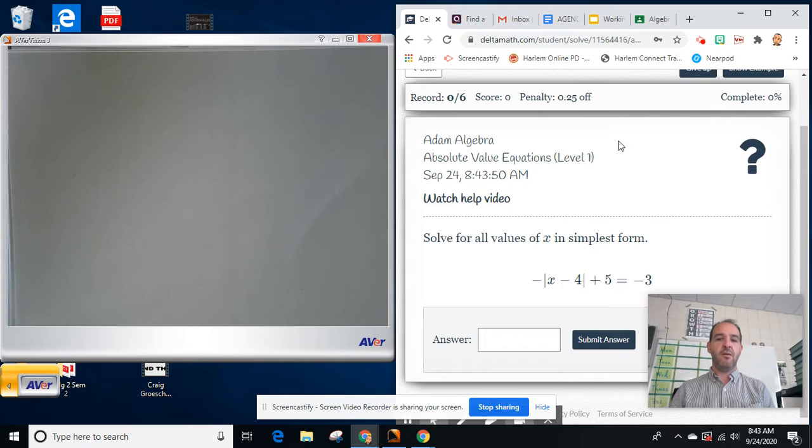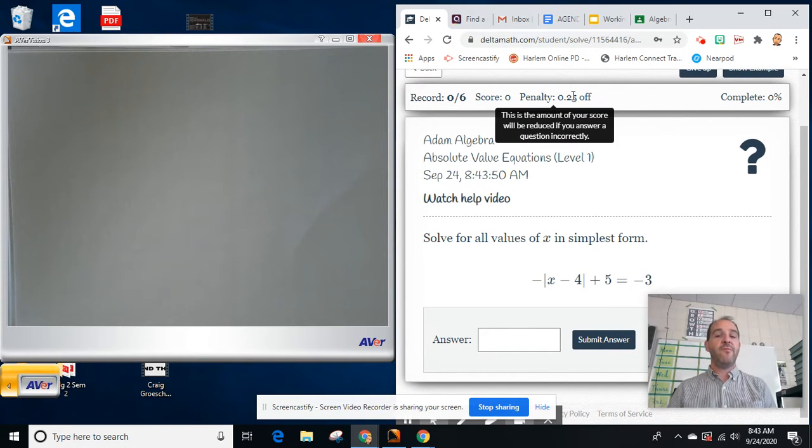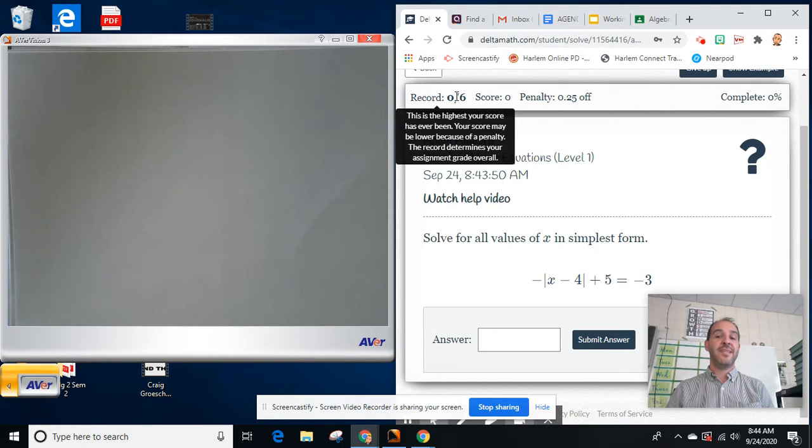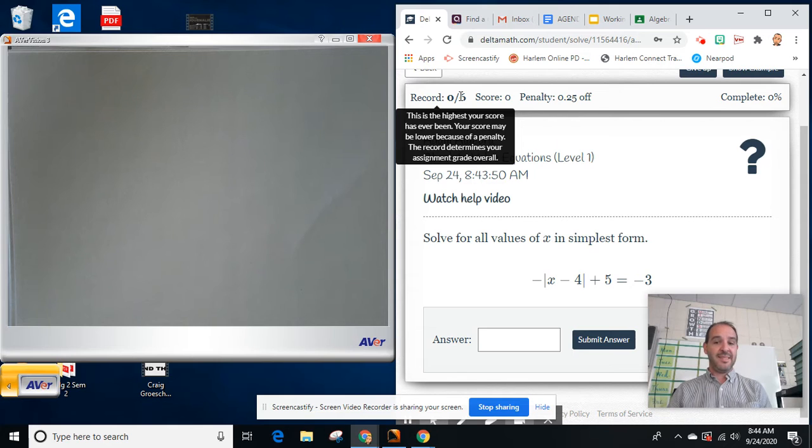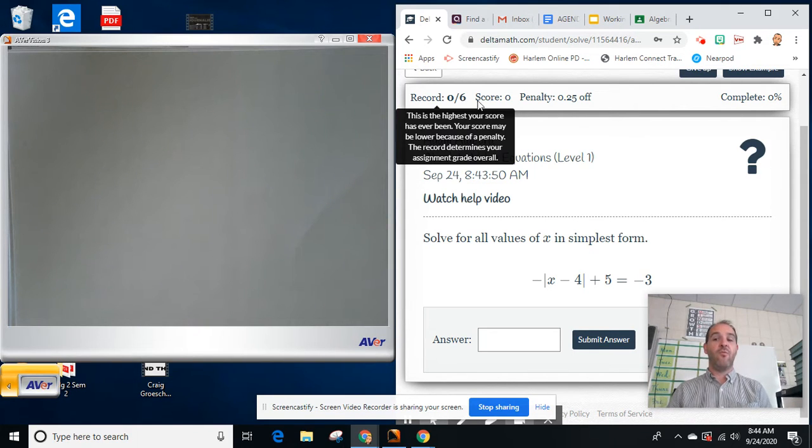Notice one thing here. If I mess up, it's going to keep giving me chances, but for every time I miss it's going to take one quarter of a point off. So what does that mean? Let's say it takes me 10 times before I get my six right, so I miss four. Instead of getting six out of six, I'm going to get five out of six because it's taking one quarter point off for each one. So that's telling me what my overall score is, not just my completion percentage.